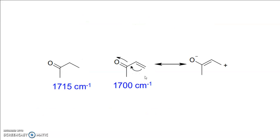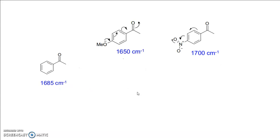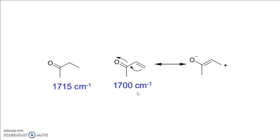For carbonyl compounds, conjugation lowers the stretching frequency of the carbonyl by 20–40 cm⁻¹. This is attributed to the decrease in the double bond character of the CO group by resonance.